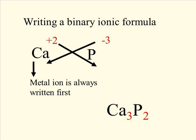With calcium and phosphorus, calcium wants to lose 2 electrons, forming a stable electron arrangement. Each phosphorus atom wants to gain 3 electrons. To transfer an equal number — 6 electrons — you need 3 atoms of calcium for every 2 atoms of phosphorus. When those electrons are transferred, you have 3 calcium ions and 2 phosphide ions, forming calcium phosphide, Ca₃P₂.